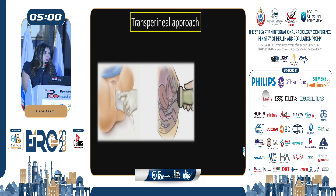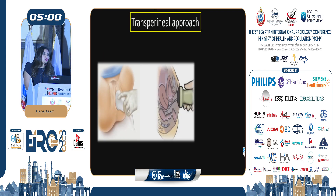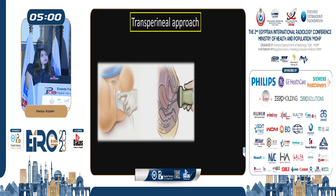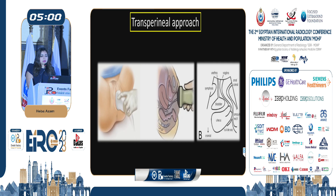In the transperineal approach, the patient is placed in a dorsal lithotomy position with the knees flexed and the hips slightly flexed and abducted. The probe is placed on the perineum. Anteriorly, there is the symphysis pubis, followed by the urethra and bladder, then the vagina and uterus, and finally the anal canal and rectum.